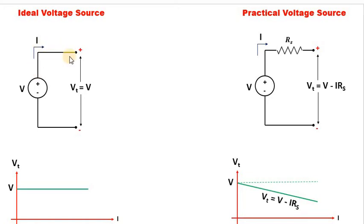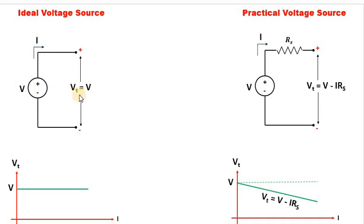In the practical voltage source, there is some finite resistance Rs in series with the source. In the ideal voltage source, no matter what current the source delivers, it will not affect the terminal voltage. V is the value of the source and Vt is the terminal voltage; for an ideal source Vt equals V. As you can see in the graph, no matter how much the current increases, the terminal voltage Vt remains constant and equal to V.